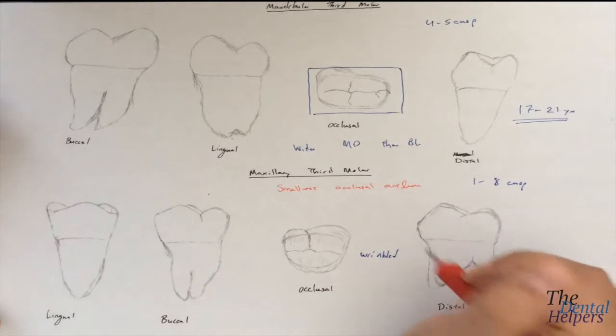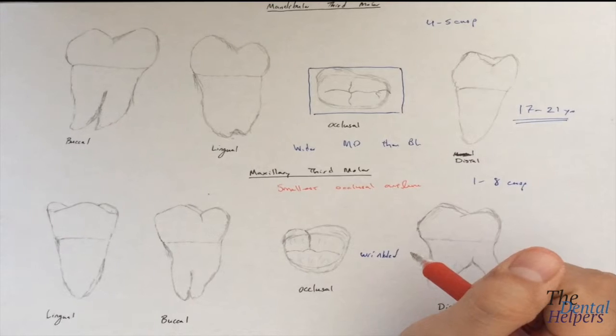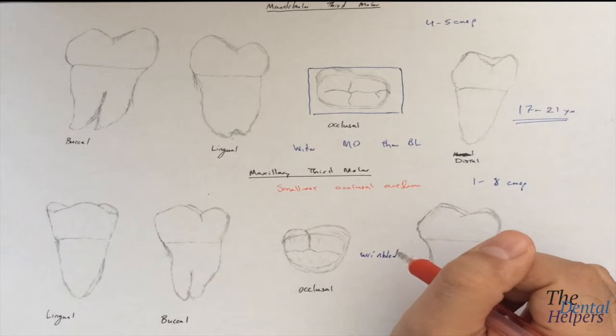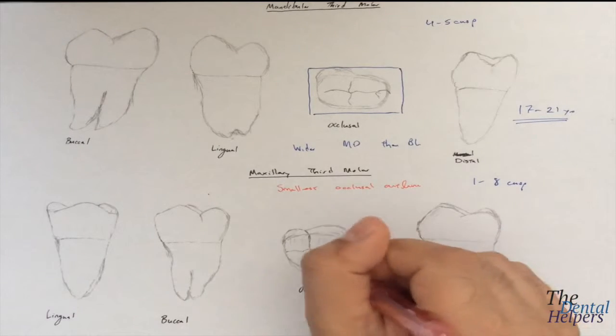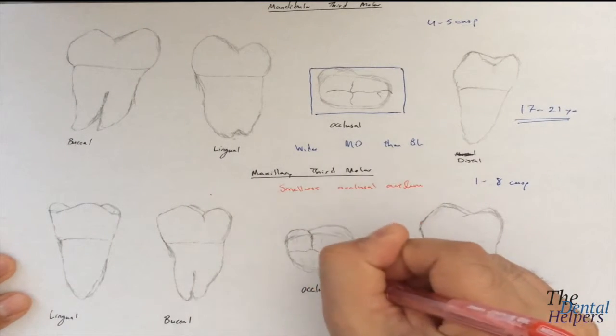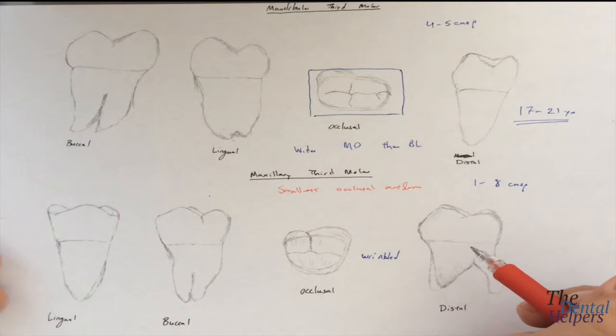In terms of the oblique ridge on the maxillary, it's poorly developed and often absent. So you may sometimes see an oblique ridge, but more likely you're not going to see anything.